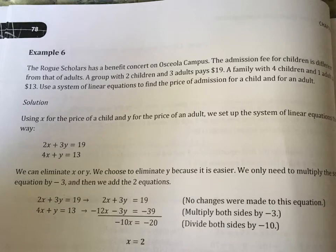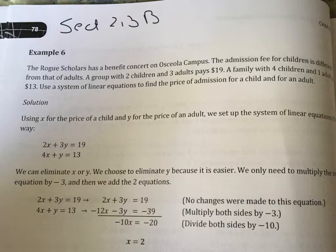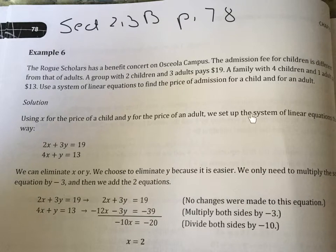Intermediate algebra: solving systems of equations by elimination — section 2.3, part B. We're working on word problems in this video. There are three of them. You should probably follow along in your book; there's enough white space to take notes there, or you can take notes on paper.